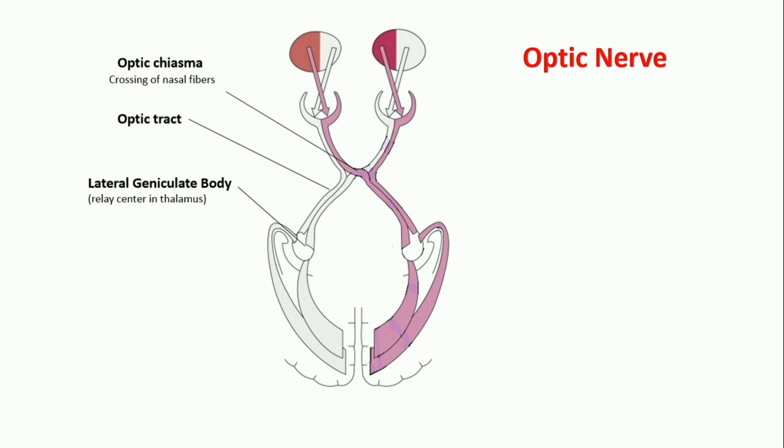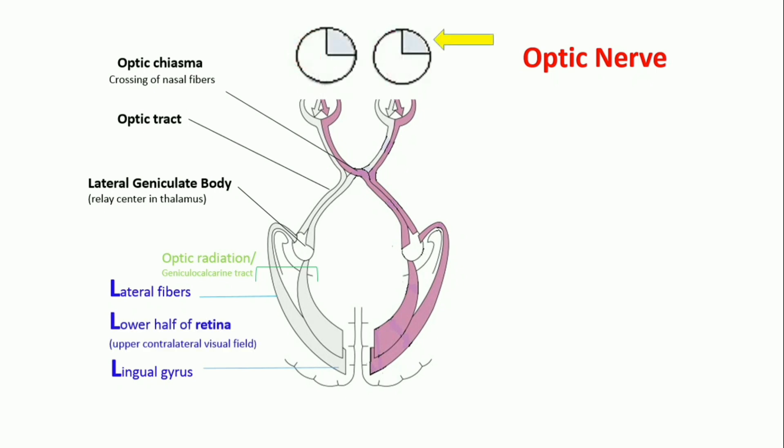From lateral geniculate body, optic radiation or geniculocalcarine tract emerges, which contains two types of fibers: lateral fibers and medial fibers. Lateral fibers make an anterior course in temporal lobe and form Meyer loop. They end up in lingual gyrus of occipital lobe. Lateral fibers represent lower halves of retina or upper contralateral visual field.